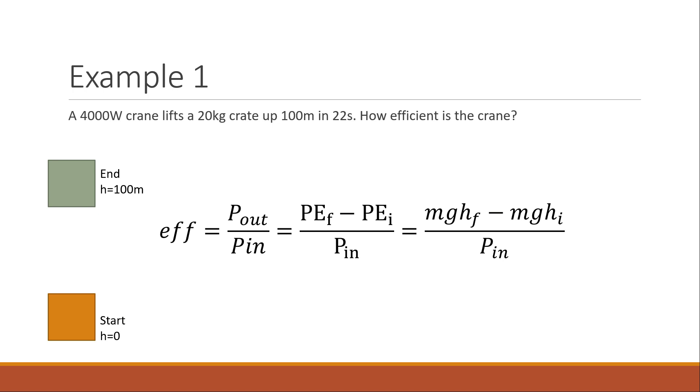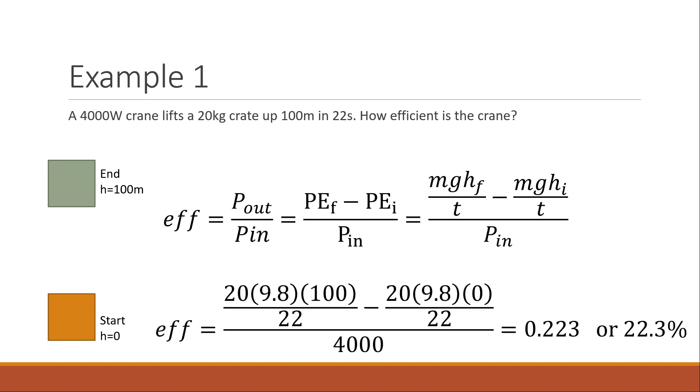And I said that my output should be the changing in height. Changing in height is changing potential energy. So here's my formula. Potential energy final minus potential energy initial. I realize I ended up making a mistake. Here we go. I fixed it up a little bit. It should be potential energy final over time minus potential energy initial over time, because we're dealing with power. Power is energy over time.